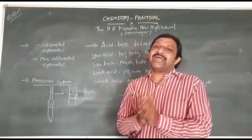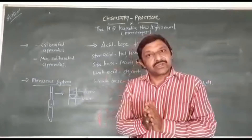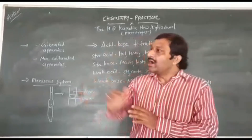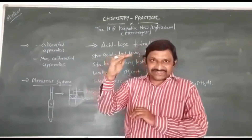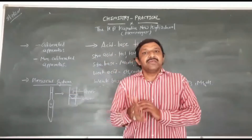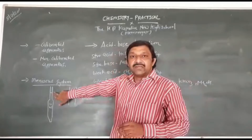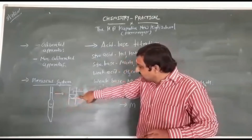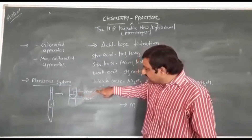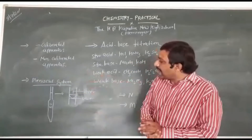In the case of colored solution and colorless solution — in 11th standard all solutions are colorless, so we will take the lower meniscus. In the case of a colored solution, we will take the upper meniscus. Here on the pipette, the sleeping line represents the upper meniscus, and the half circle represents the lower meniscus.